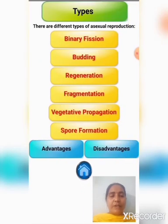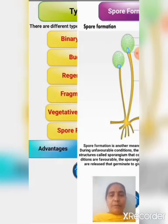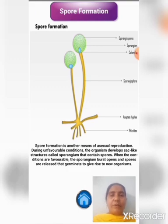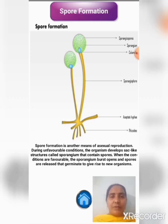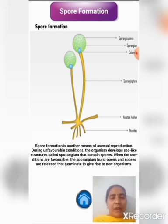Now, let us observe another type of asexual reproduction: spore formation. During unfavorable conditions, organisms develop sac-like structures called sporangium that contain spores. In this picture, you can see spore formation in rhizopus. The green colored dot is the sporangium, which contains spores. When conditions are favorable, the sporangium bursts and releases spores that give rise to new organisms.